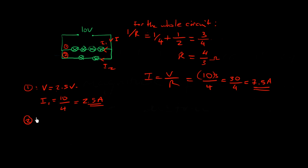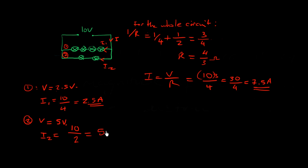Let's verify: for branch 2 (two bulbs, 2 ohms), the voltage drop is 10 volts, so I2 = 10/2 = 5 amps. Together, 2.5 + 5 = 7.5 amps, confirming Kirchhoff's first law is satisfied. No charge is lost — the calculation checks out. You can always use these checks to build confidence as you work through problems.